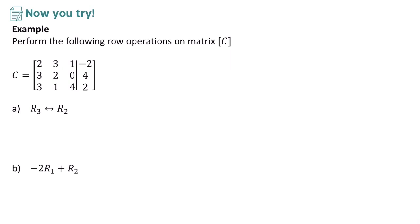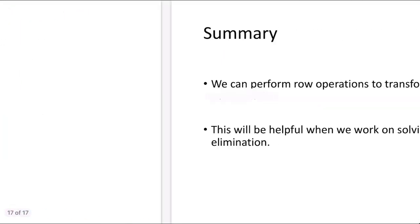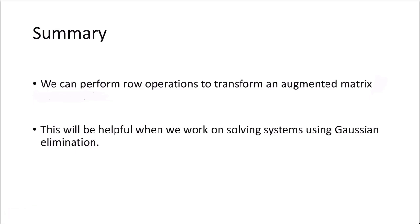Now let's practice performing operations on matrix C. The first operation is to swap row 3 and row 2 — row 1 stays, row 3 goes to row 2's position, and row 2 goes to row 3's position. Next, for negative 2R1 plus R2: rows 1 and 3 stay unchanged. Computing negative 2R1 gives negative 4, negative 6, negative 2, 4. Adding to R2: negative 4 plus 3 is negative 1, negative 6 plus 2 is negative 4, negative 2 plus 0 is negative 2, and 4 plus 4 is 8. These row operations will be very helpful when solving systems using Gaussian elimination in the next video.